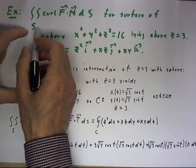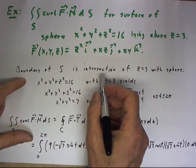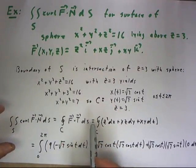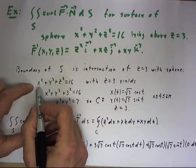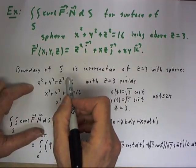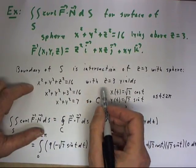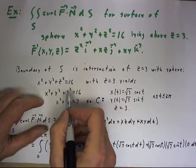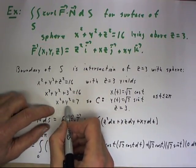The boundary of this surface is just the intersection of the z equals 3 plane with this sphere. It's easy to do that intersection: x squared plus y squared plus z squared equals 16 with z equals 3 gives us x squared plus y squared equals 7.